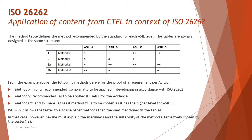The next thing to understand is a typical example of a method table — what exactly it is and how we derive certain outcomes from it. The method table defines the methods recommended by the standard for each ASIL level, where ASIL stands for Automotive Safety Integrity Level, covered in detail in the previous tutorial. The tables are always designed in the same structure: different methodologies are listed in rows, and in the columns you have different ASIL levels starting with ASIL A as the lowest and ASIL D as the highest, with recommendations shown in different notations.